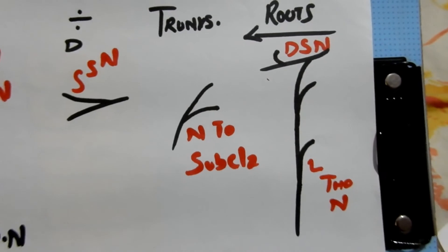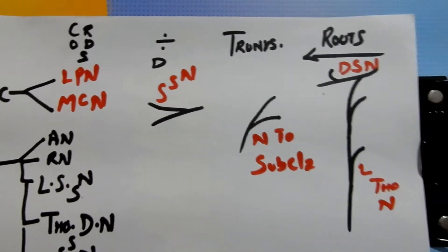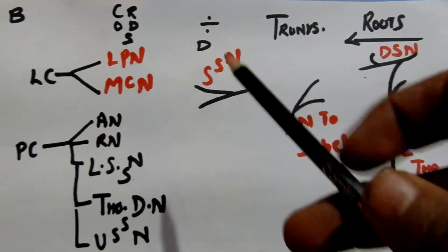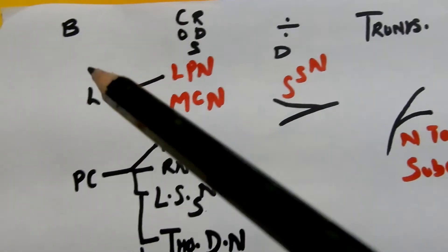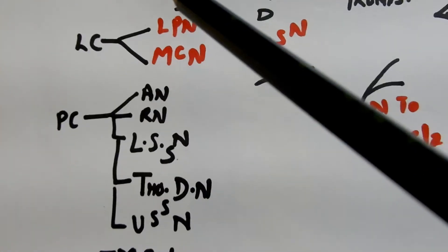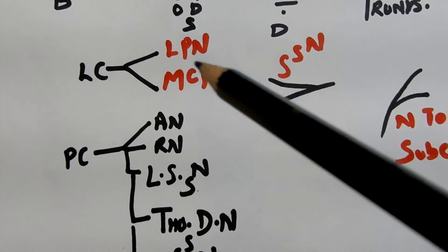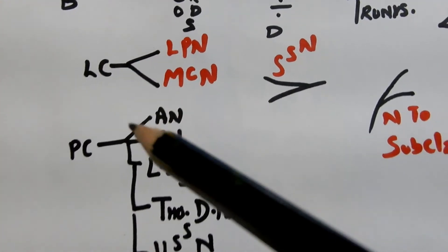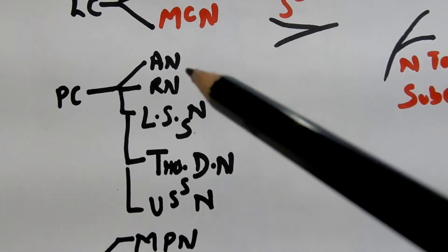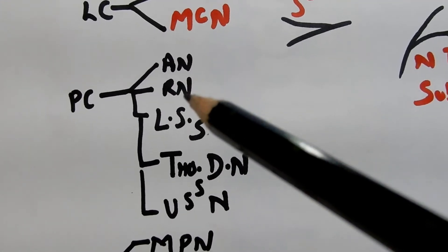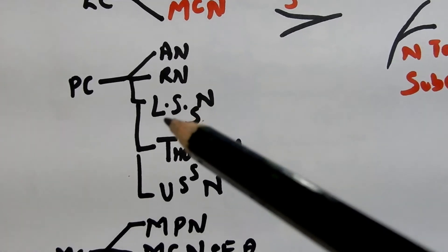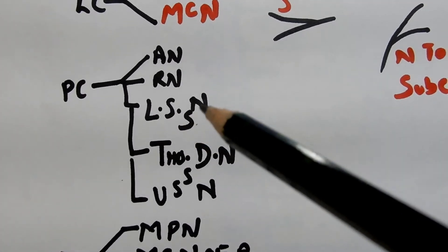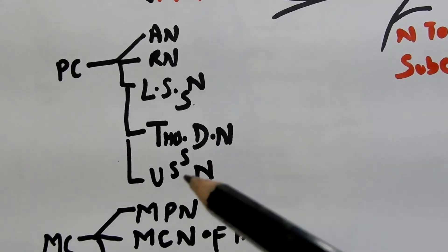From the divisions we have the suprascapular nerve. The lateral cord gives off two branches: lateral pectoral nerve and musculocutaneous nerve. The posterior cord gives off many branches: axillary and radial nerve, lower suprascapular nerve, thoracodorsal nerve, and upper suprascapular nerve.